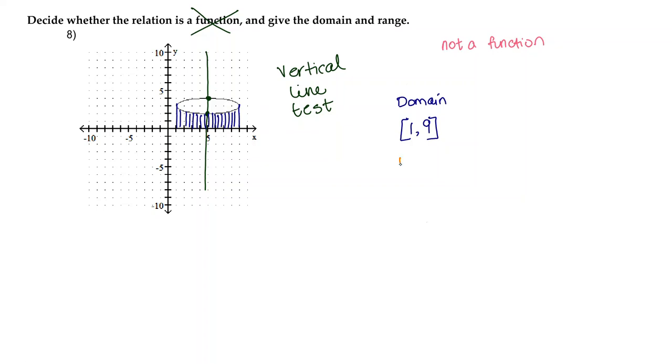Now for our range, which is going to be our y values, we're going to start from down here and we're going to move up and see where the function starts existing on the y-axis. It looks like it starts existing right about here, which is 2, and it includes 2. We're going to keep going until right about here, which is 4, and it includes 4.